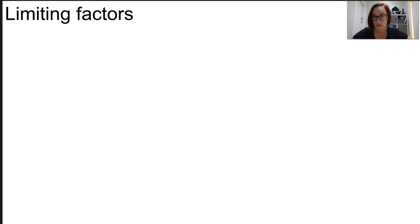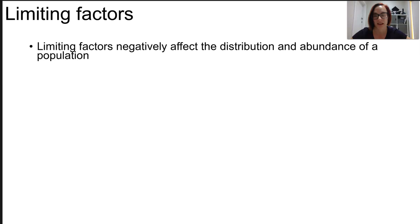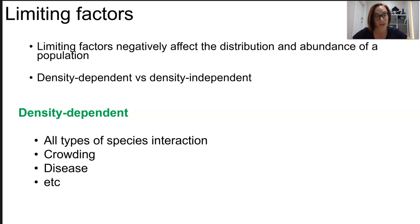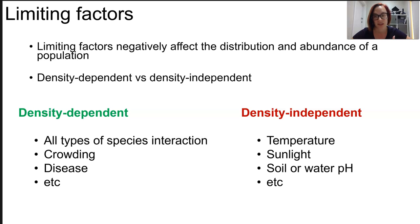One of these factors is a resource which the population requires but it's in really small quantities. It can negatively affect the population. This is a limiting factor. Now limiting factors can depend on the size of the population and this makes them density dependent or they can affect the population regardless of how many organisms are in it. So that's our density independent.